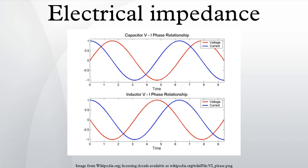Impedance measurement in power electronic devices may require simultaneous measurement and provision of power to the operating device. The impedance of a device can be calculated by complex division of the voltage and current, by applying a sinusoidal voltage to the device in series with a resistor and measuring the voltage across the resistor and across the device. Performing this measurement by sweeping the frequencies of the applied signal provides the impedance phase and magnitude. The use of an impulse response may be used in combination with a fast Fourier transform to rapidly measure the electrical impedance of various electrical devices. The LCR meter is a device commonly used to measure the inductance, capacitance, and resistance of a component; from these values the impedance at any frequency can be calculated.